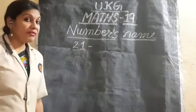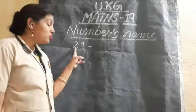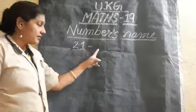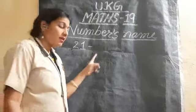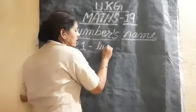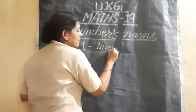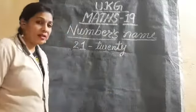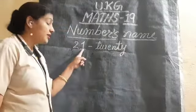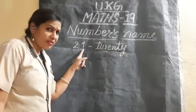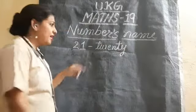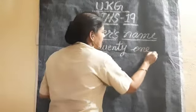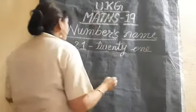21. How do we write 21? First write 20 — T-W-E-N-T-Y — that is 20. Then add the spelling of one: O-N-E. So twenty one is the numbers name for 21.